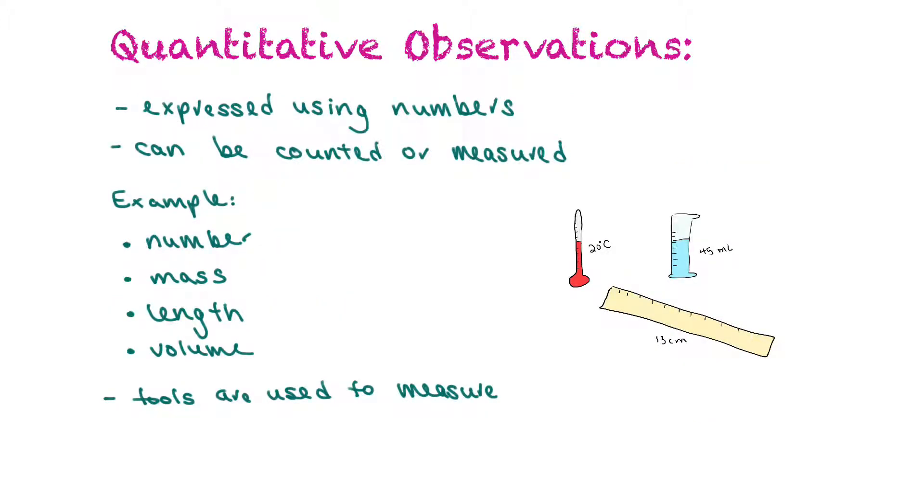Quantitative observations are expressed using numbers. So those numbers could either be counted values or measured values. You might count the number of animals in a field, or you might measure the mass or the length or the volume. So the tools are used to measure qualitative observations.